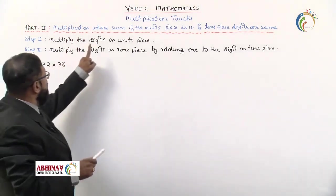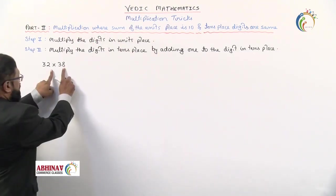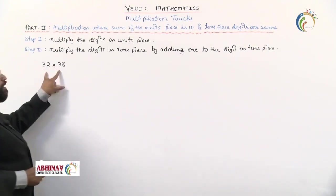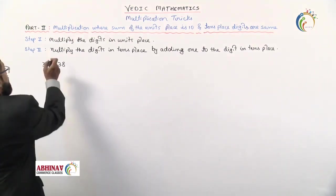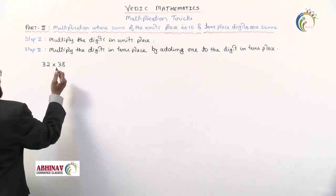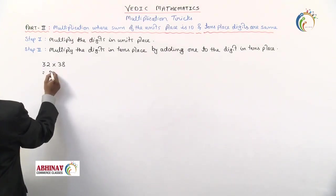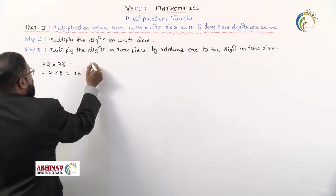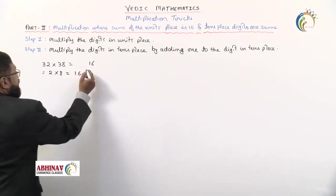This is the type of multiplication where the sum of the units place is 10 — here 2 + 8 = 10 — and the tens place digits are the same: 3 and 3. Step 1: multiply the units place digits. 2 × 8 = 16. Write 16 on the right-hand side.